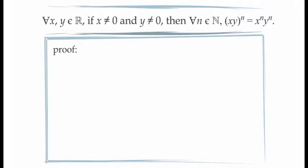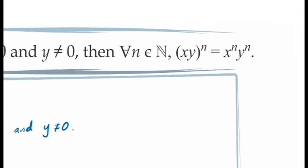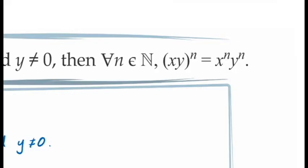To begin, we're going to prove that exponents distribute over multiplication. This means for every value of x and y in the real numbers, with x and y not equal to 0, the product x times y to the exponent n will be equal to x to the exponent n times y to the exponent n. And this is true for all values of n in the natural numbers.